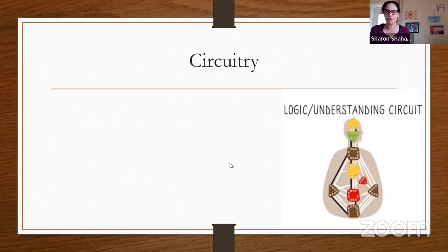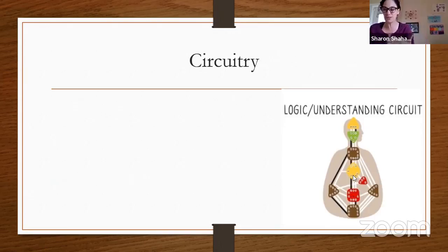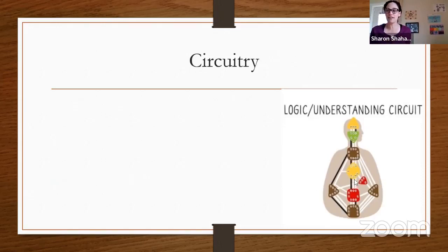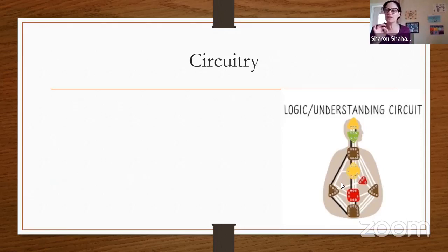Here is the logic and understanding circuit. Between the sacral and the G center, you have the 5-15 — the channel of rhythm. Gate 15 is extreme rhythms, gate 5 is very regular rhythms. This is one of the channels we share with every living thing. Ra described it as part of the knowledge of all forms — every living cell has the 5-15. It's a very basic building block of life, not particularly human.